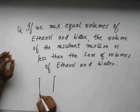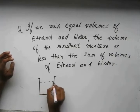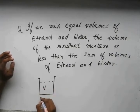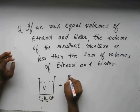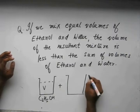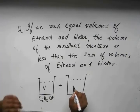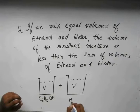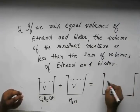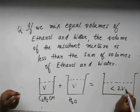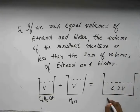Let's assume that we took a beaker with V volume of ethanol C2H5OH plus we took water in a container, again V volume of water. The total volume which I will get is less than 2V. This is the mixture.